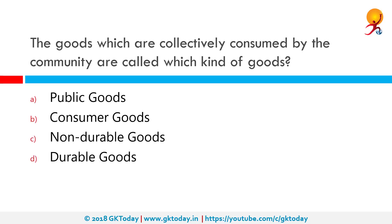The goods which are collectively consumed by the community are called public goods. Consumer goods, on the other hand, are goods bought and used by consumers rather than by manufacturers for producing other goods. Also in economics, a durable good or hard good is a good that does not quickly wear out, whereas a non-durable good or soft good is the exact opposite.